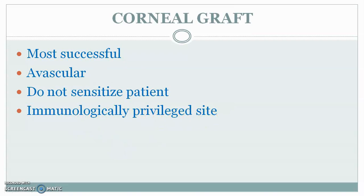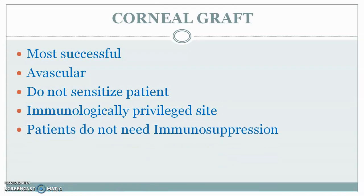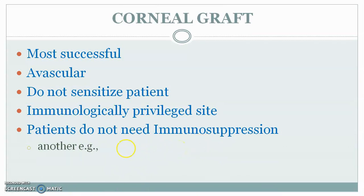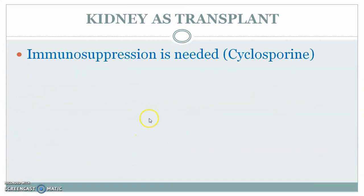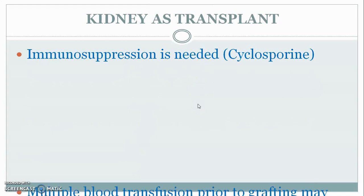The transplant of cornea will not induce or provoke the immune system, that is why it is called an immunologically privileged site — it enjoys some immunological privileges. Patients do not need immunosuppression because there will be no immunity against the graft. Another example is cartilage, which is also an immunologically privileged site. For kidney transplants, however, immunosuppression is needed because the kidney is vascular, not avascular.